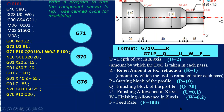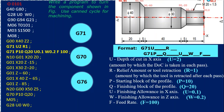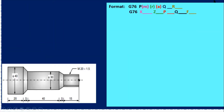After the rough turning, we take the finish cut using G70 — the finishing cycle. The finishing allowances along X and Z-axis are now removed. The cycle starts from the beginning position and ends at the finish block, which is the G70 canned cycle. After that M05 stops the spindle, and G28 U0 W0 moves the tool back to its reference position.